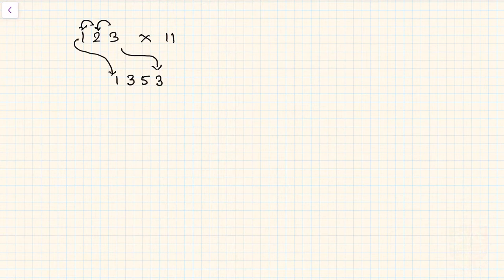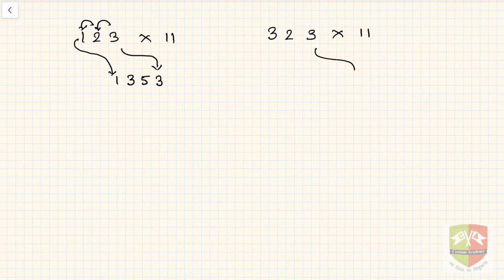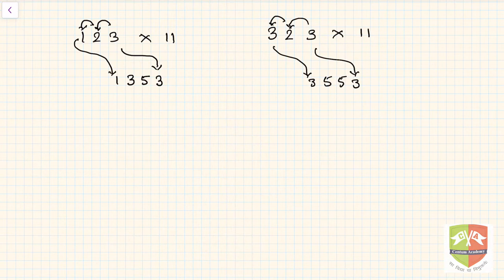Another three-digit example: 323 into 11. Write 3, then 3 plus 2 is 5, then 2 plus 3 is 5 again, and the leading 3 comes back. So 3553 is the answer.